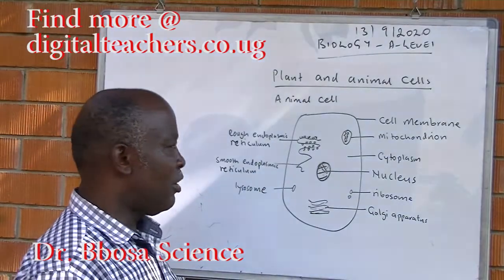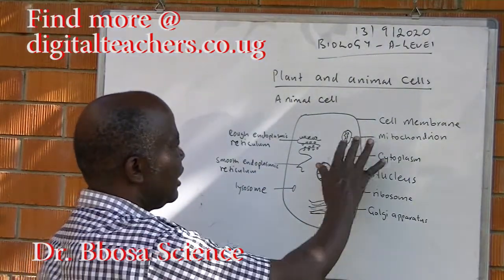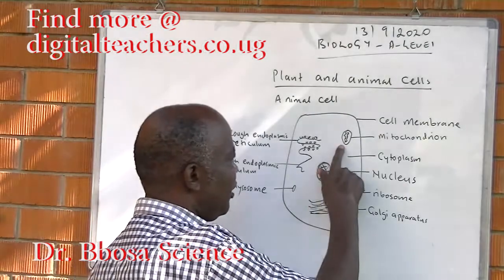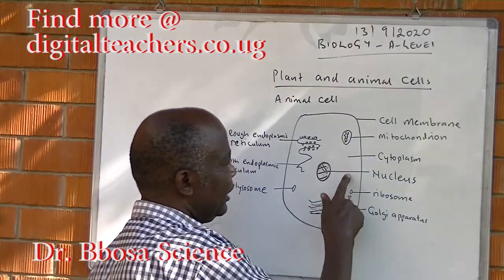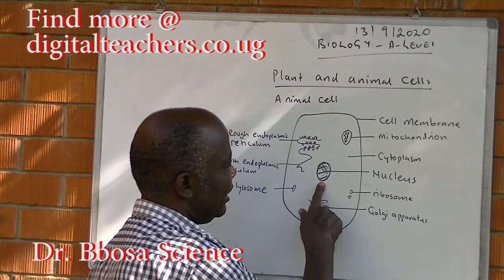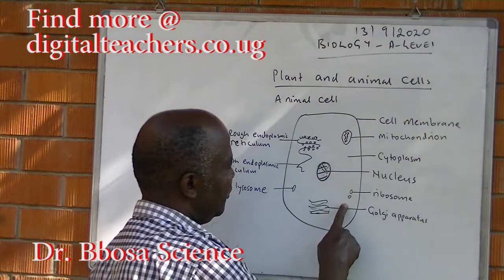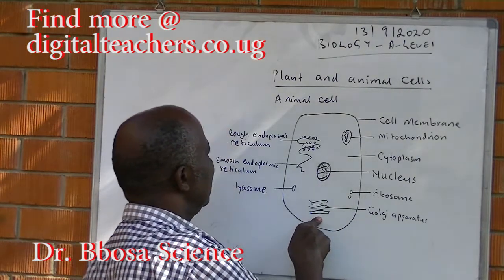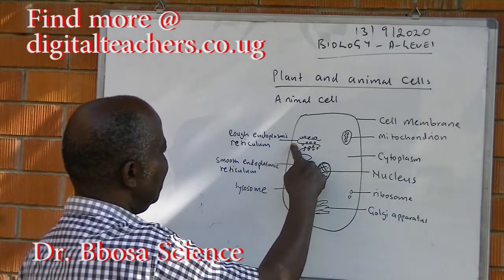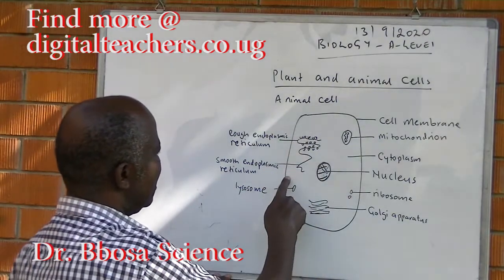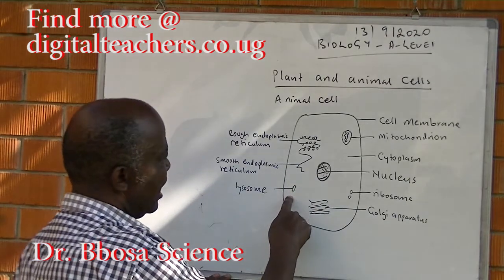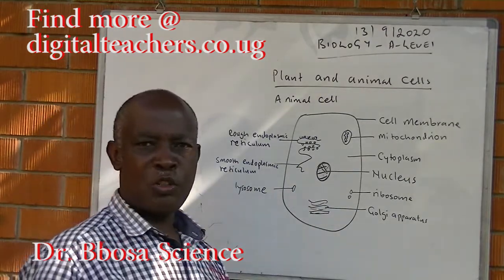Parts of animal cells include cell membrane, mitochondria, cytoplasm, nucleus, ribosome, Golgi apparatus, rough endoplasmic reticulum, smooth endoplasmic reticulum, and a lysosome.